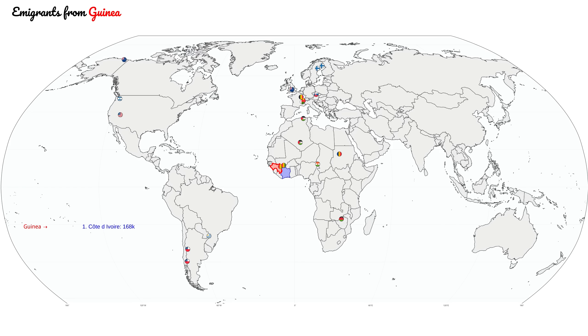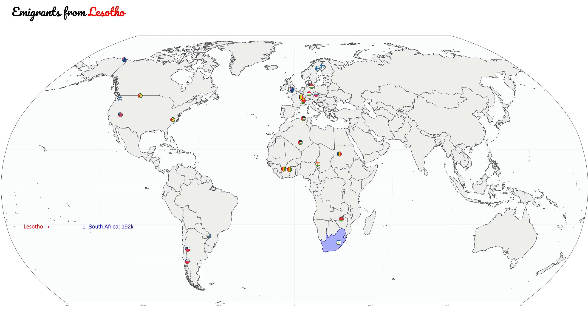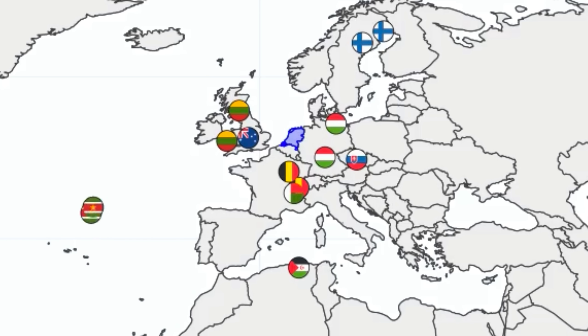These flows can reveal a lot about politics and history. Most of the time people move to neighboring countries, but there are exceptions. Here we can see people move from Suriname, a former Dutch colony, to the Netherlands.